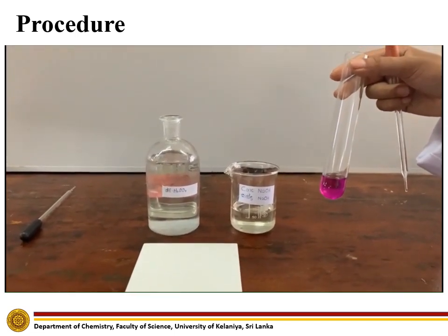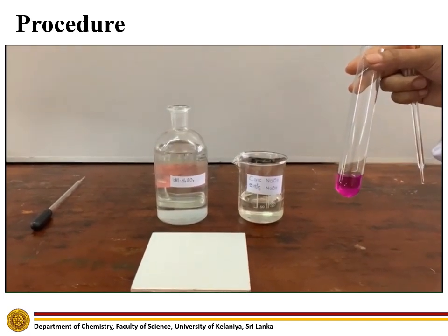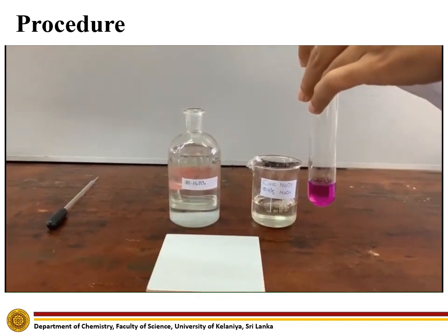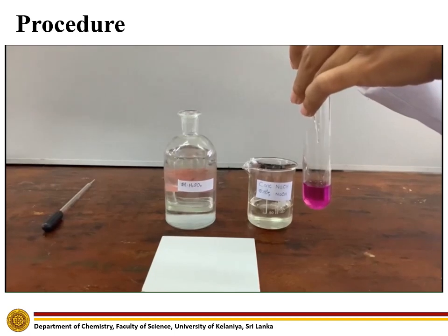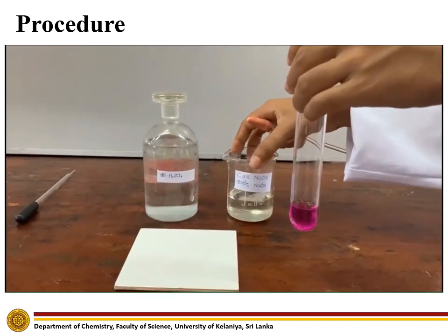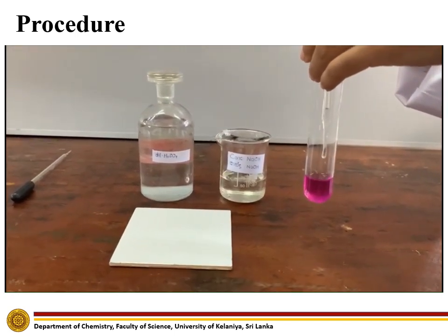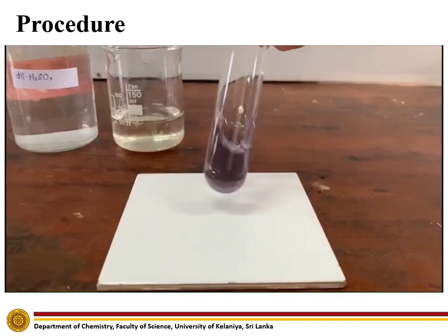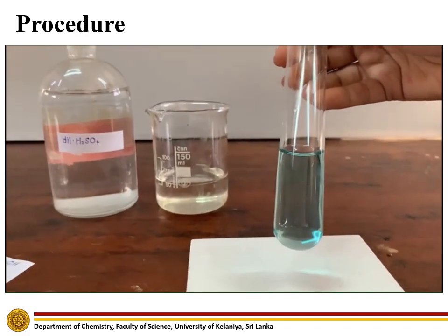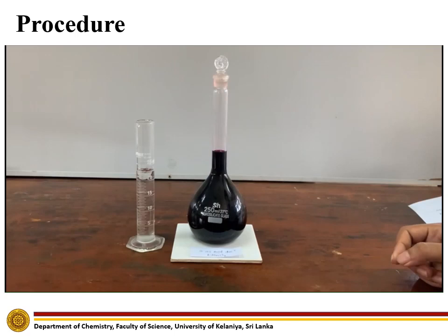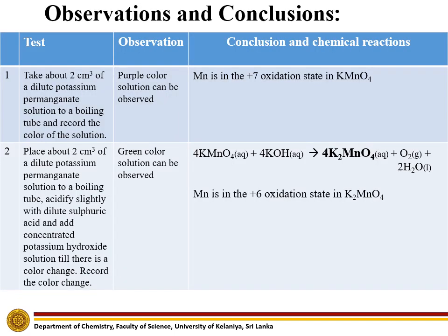As the second step, we are going to slightly acidify the prepared dilute potassium permanganate solution using a few drops of dilute sulphuric acid. Then add concentrated sodium hydroxide dropwise and observe the color change. A green color solution can be obtained. This green color solution indicates the +6 oxidation state of Manganese. The light purple color solution indicates the +7 oxidation state of Manganese.